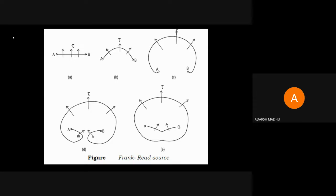In the second figure B, the line is displaced and formed at a point — you can see the figure is changing to an arc shape. Then you can see the arrow marks here, which indicate the direction in which the deformation or dislocation is happening. The deformation is occurring in three directions, and A and B remain the endpoints.